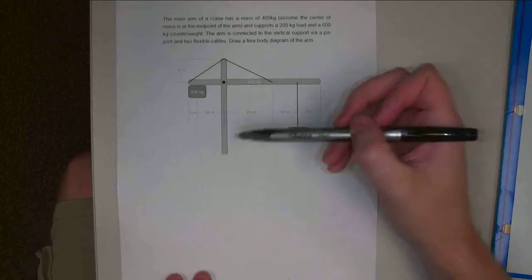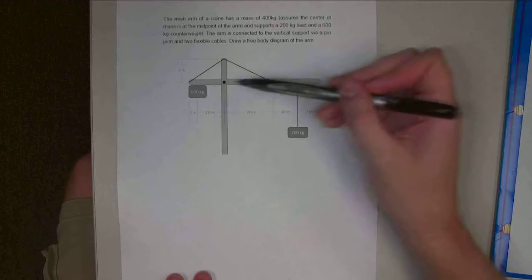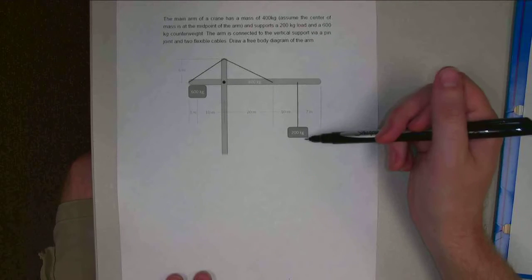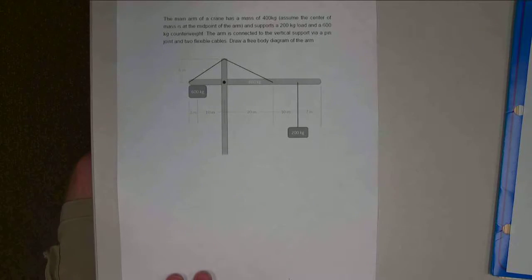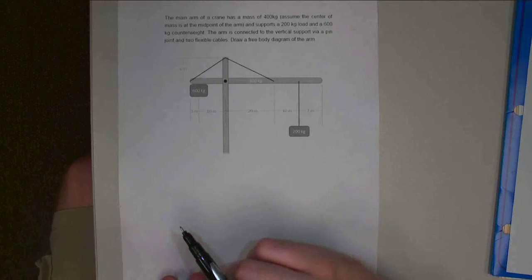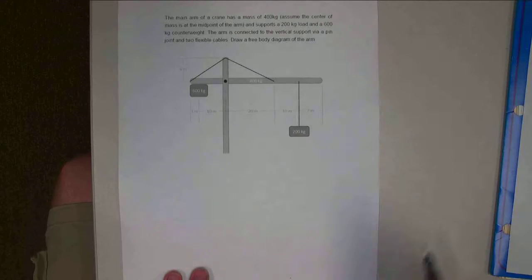Alright, for this video we have a crane. It's got a vertical piece connected to a horizontal piece over here. It's got a counterweight on one end, a load lifting on the other end, and then these two cables reinforce that main arm. So based on the dimensions and the forces given, we're asked to draw a free body diagram of this main horizontal arm.